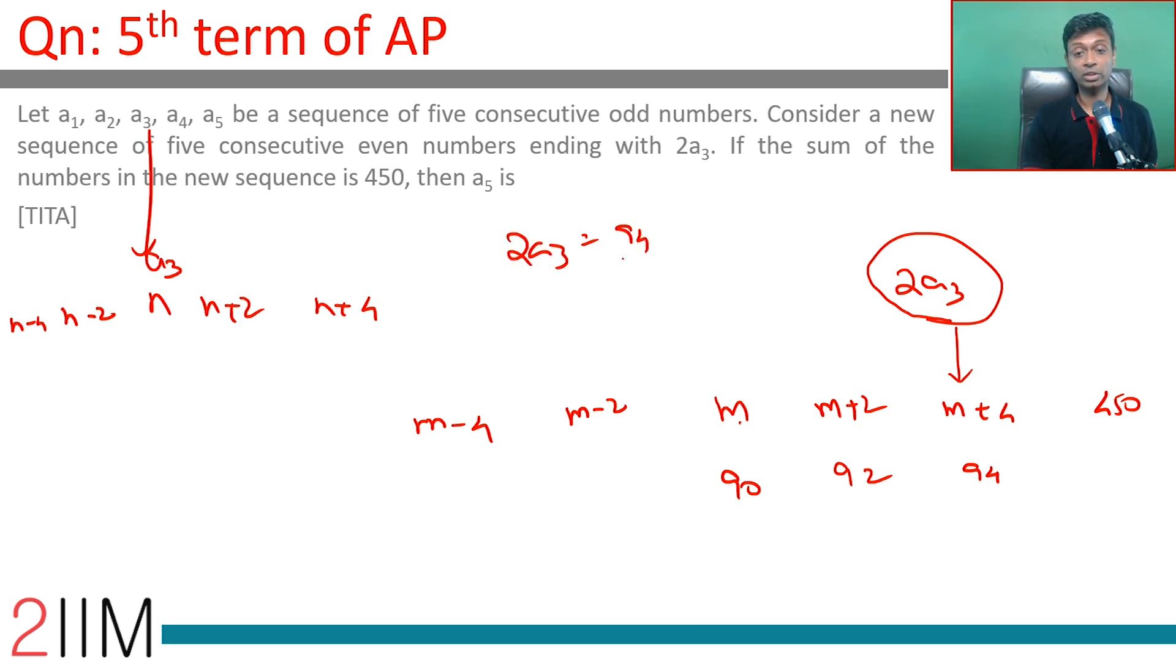2*a3 equals 94, or a3 is 47. This is 47, 49, 51. So a5 should be 51.